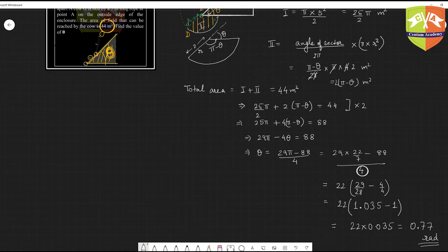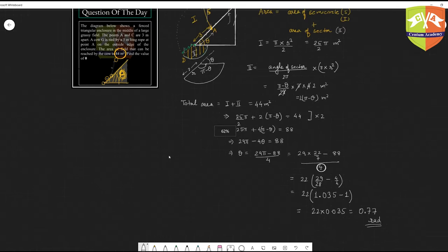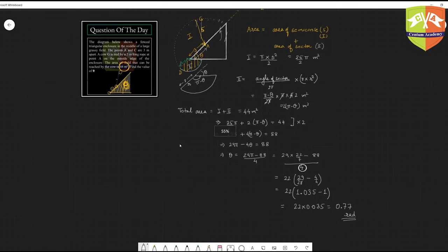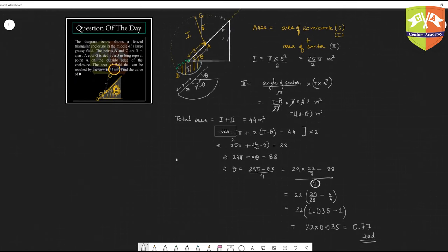So this should be the answer - 0.77 radians. This is how you have to solve this. You can convert it into degrees also but that's not required here. So the angle is 0.77 radians. I hope you understood this solution. Let me zoom out and show you in one frame, this is what is the solution.